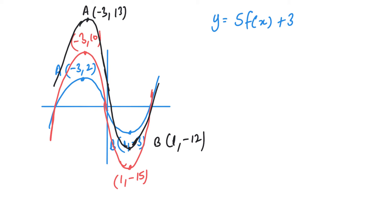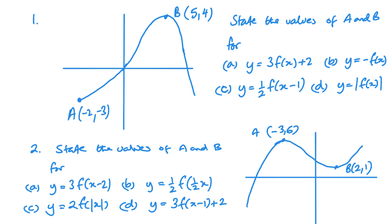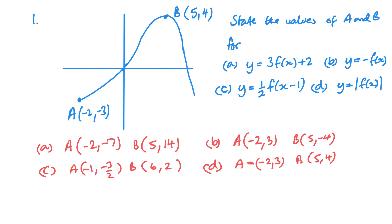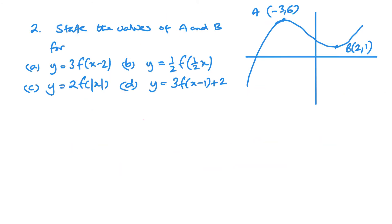Now I'm going to give you a few to try, including a couple of harder ones, and then I'll go through them at the end. For the first practice question, running through the answers: for part a — moving 2 to the right and a vertical stretch of 3 — point a's y becomes 18. For coordinate b, moving 2 to the right means the x value becomes 4, and with a vertical stretch of 3, 3 times 1 is 3.